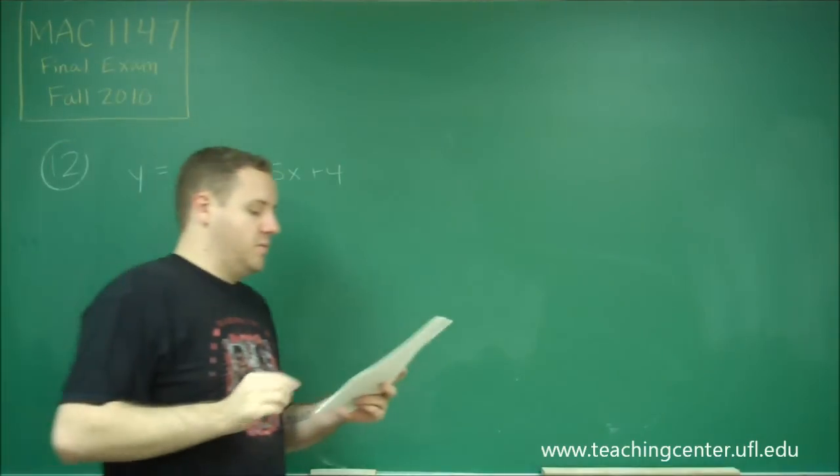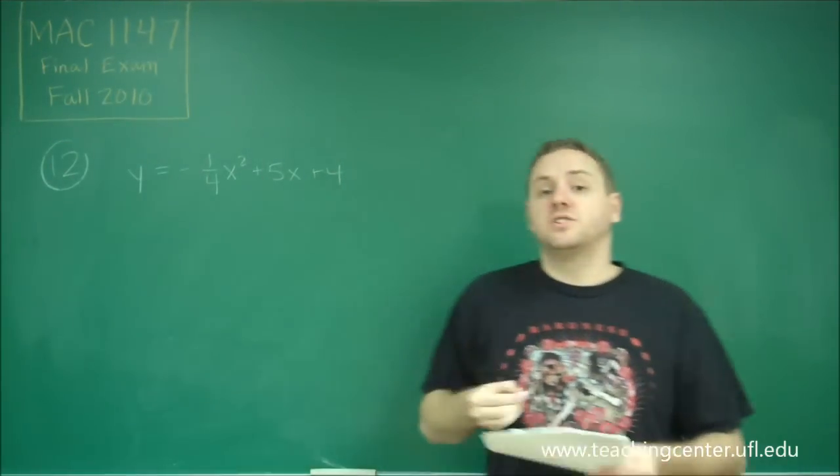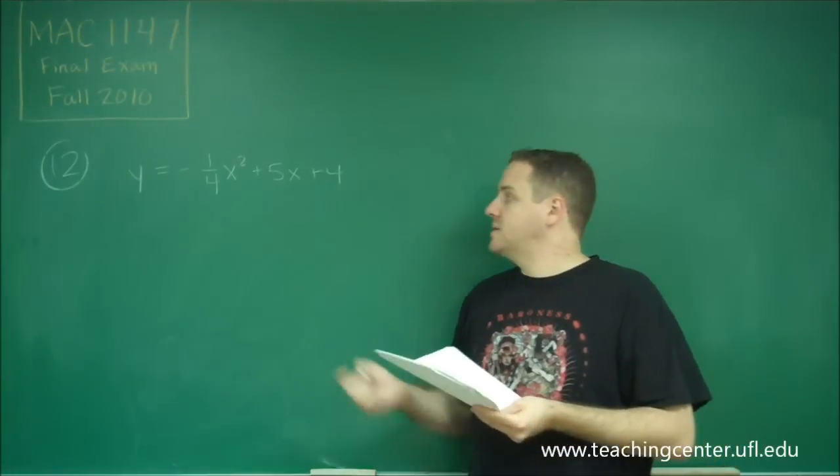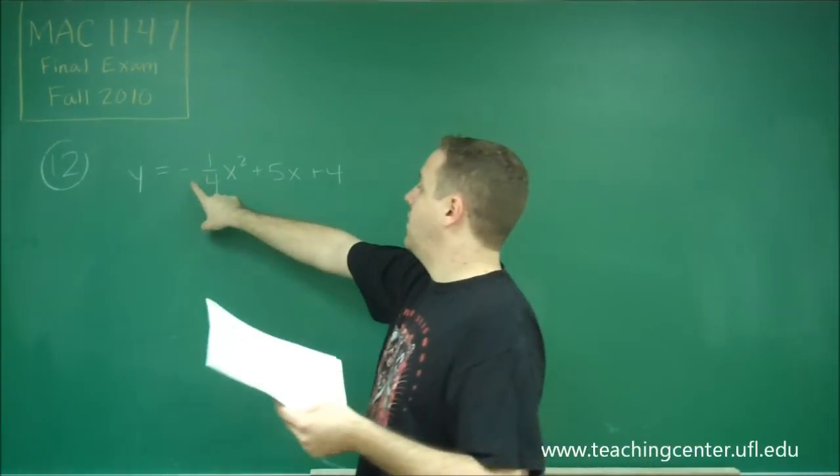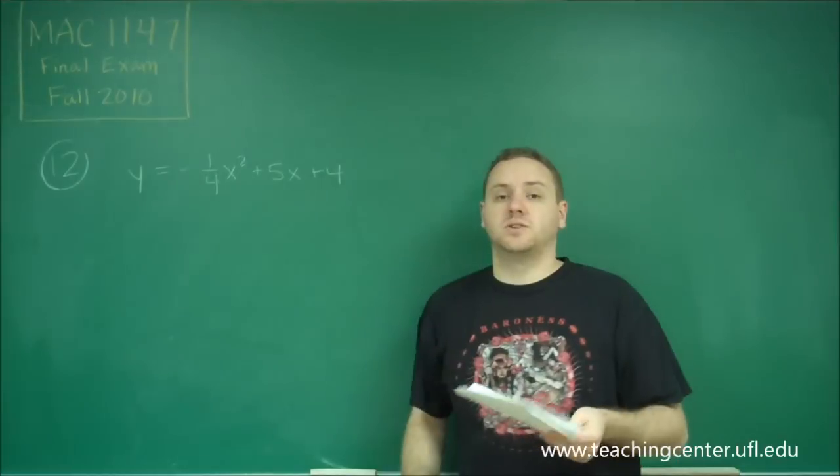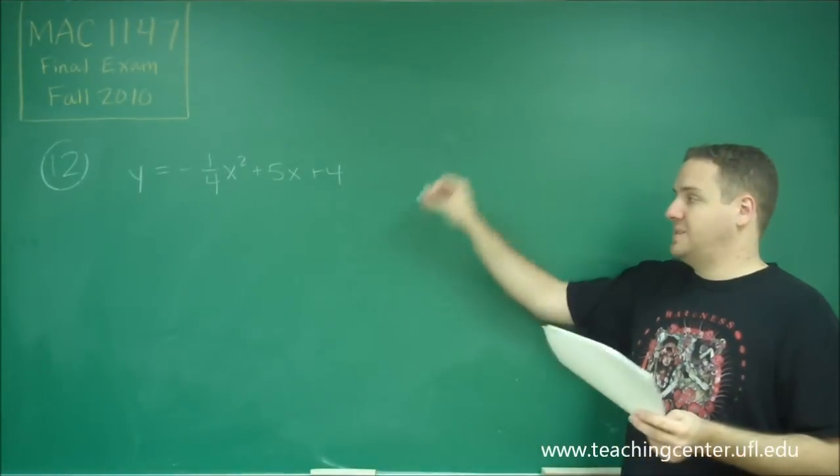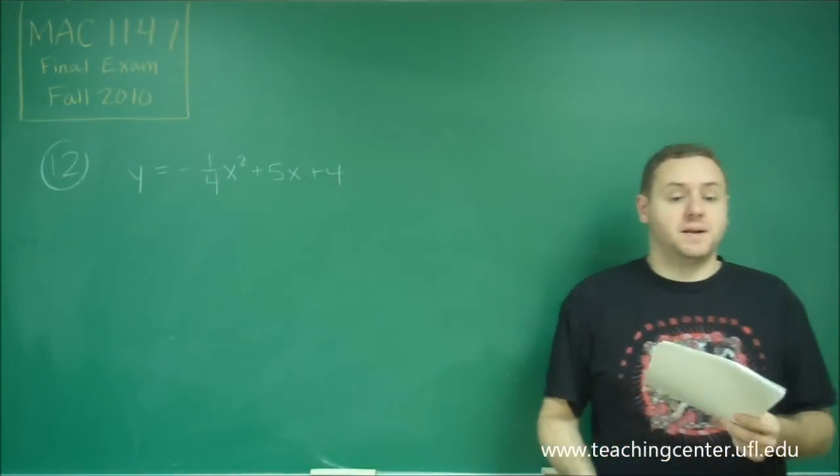First of all, this should be obvious that this function does have a maximum value, because a quadratic equation like this describes a parabola, and since our coefficient on our leading term is negative, we know it's an upside-down parabola, and therefore it does have a maximum.